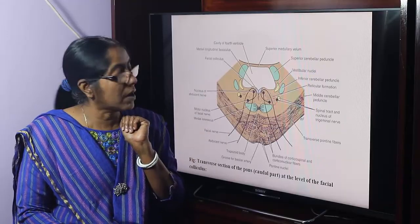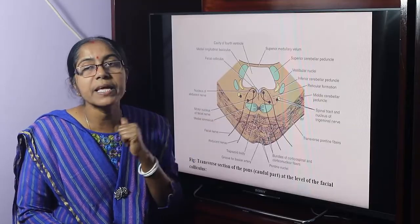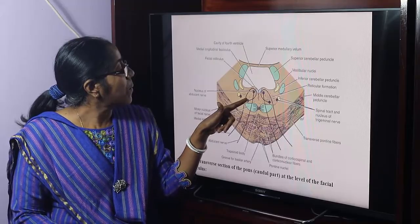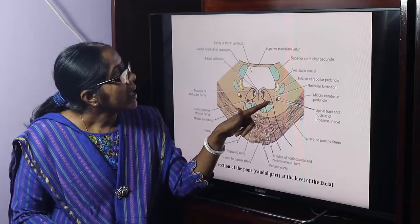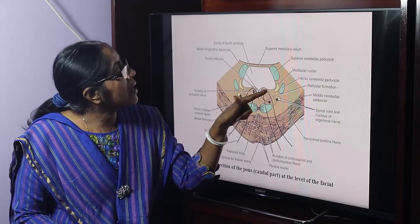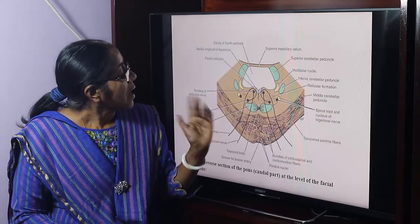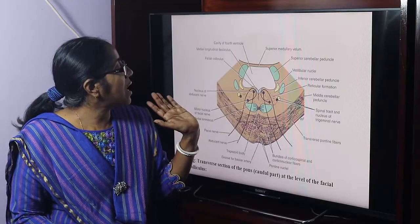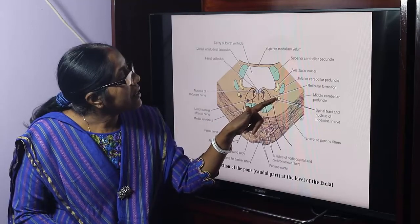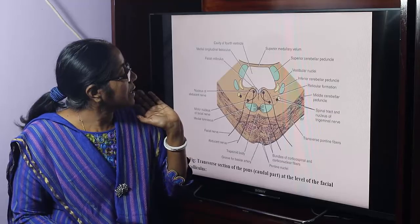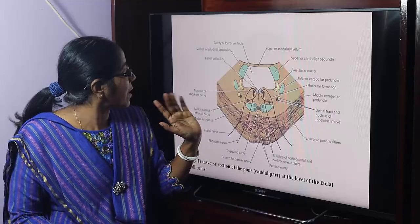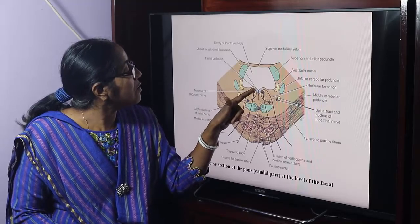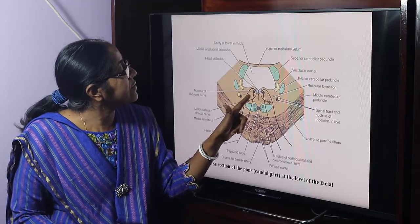At the level of the facial colliculi — the caudal part of the pons — the key structures in the gray matter include: the motor nucleus of the facial nerve, the nucleus of the abducens nerve, the spinal nucleus of the trigeminal nerve, and the vestibular nuclei. The facial nerve fibers wind around the abducens nerve nucleus, thus forming the facial colliculus.